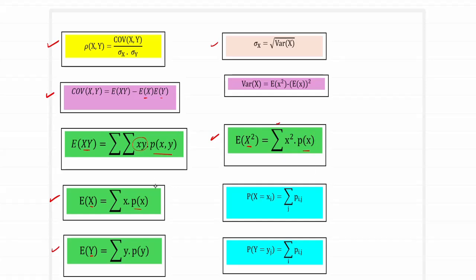Probability of x equal to xi is the marginal probability function of x, obtained by adding up all elements along the j values keeping i fixed. Similarly, probability of y equal to yj is obtained by adding along all i values keeping j fixed. This gives the marginal probabilities of x and y. Sigma y can be obtained in the same fashion by replacing variable x with variable y.